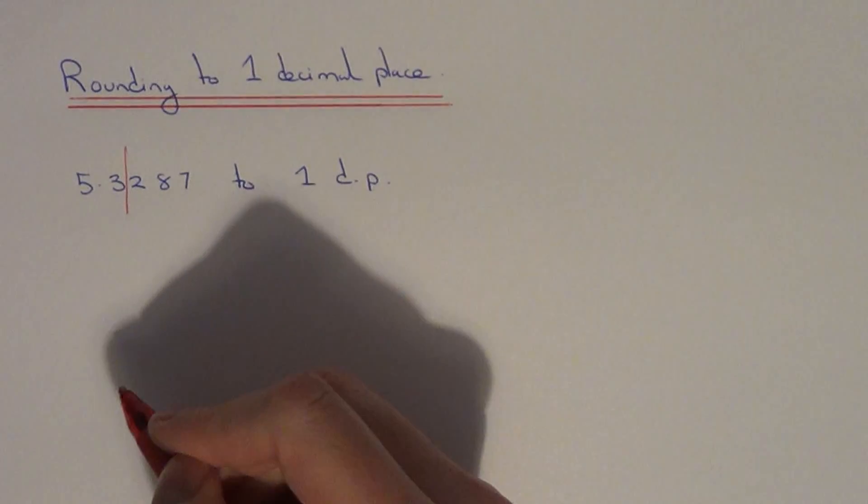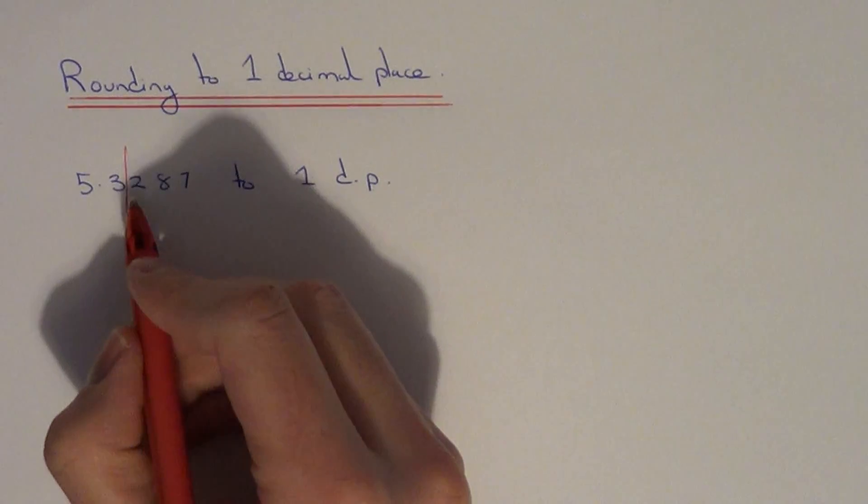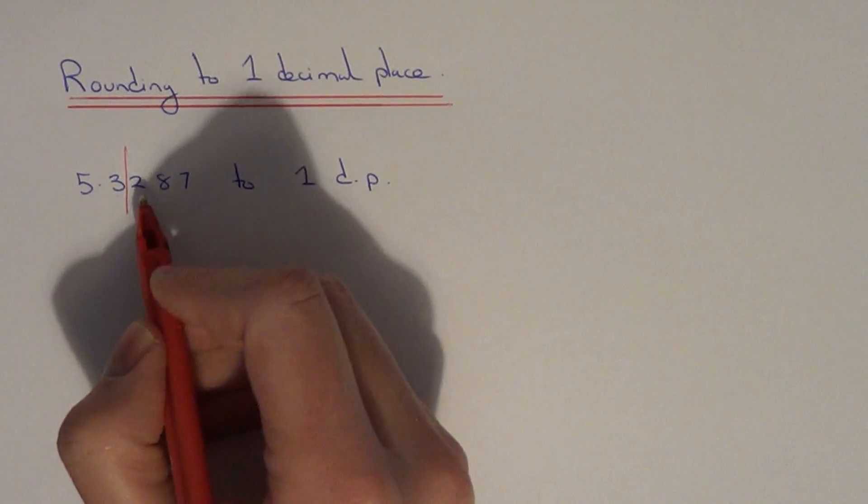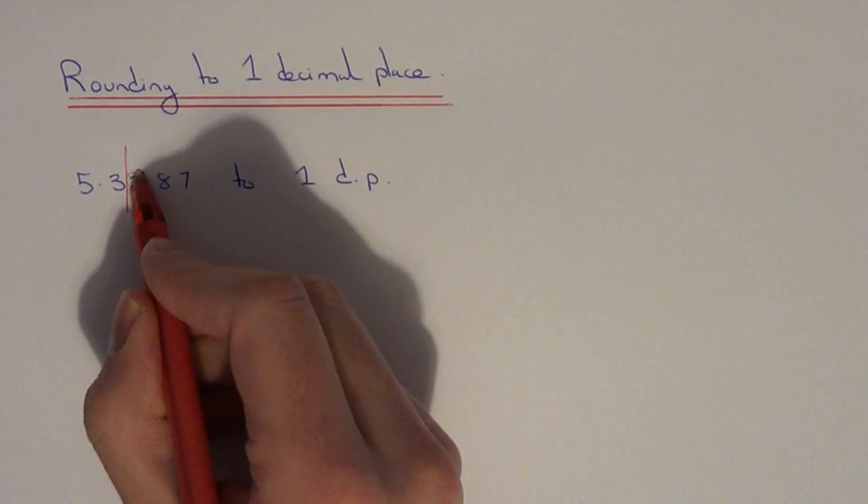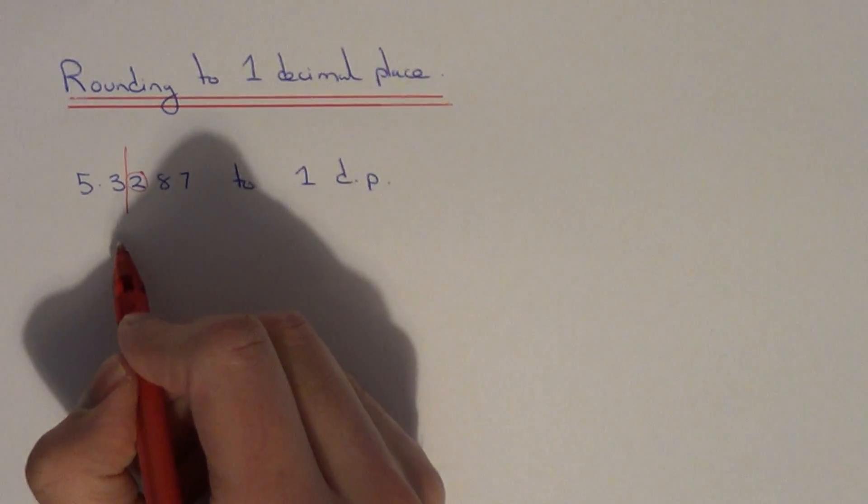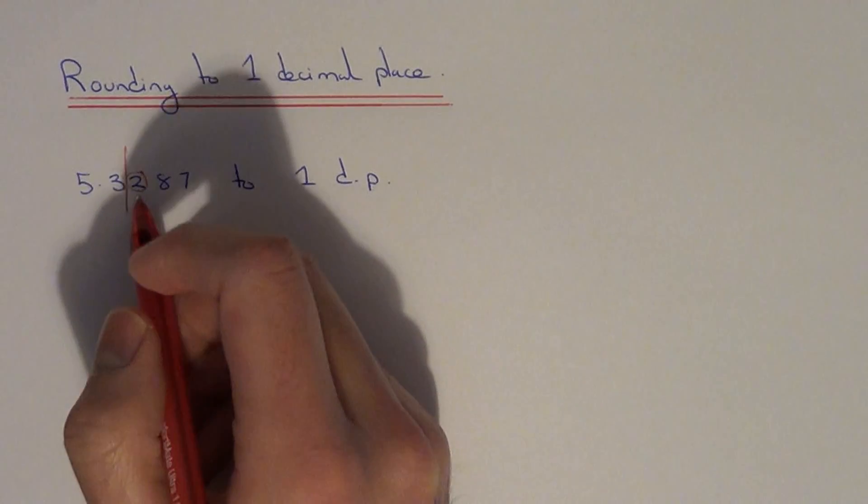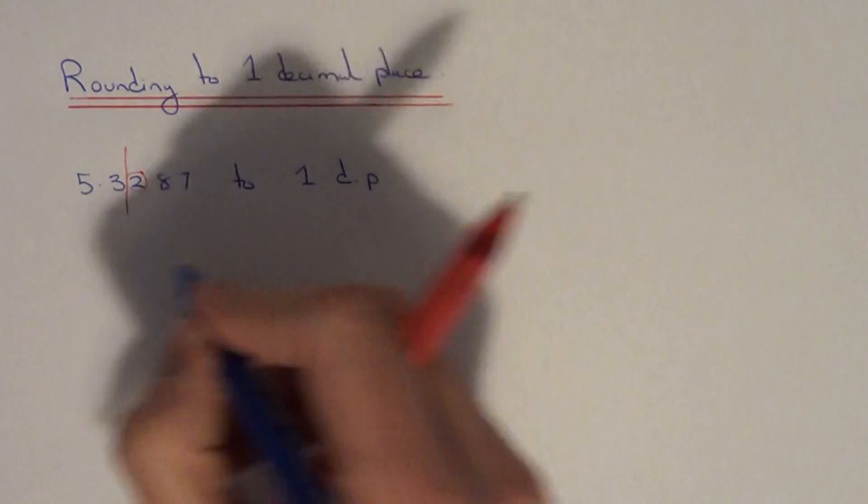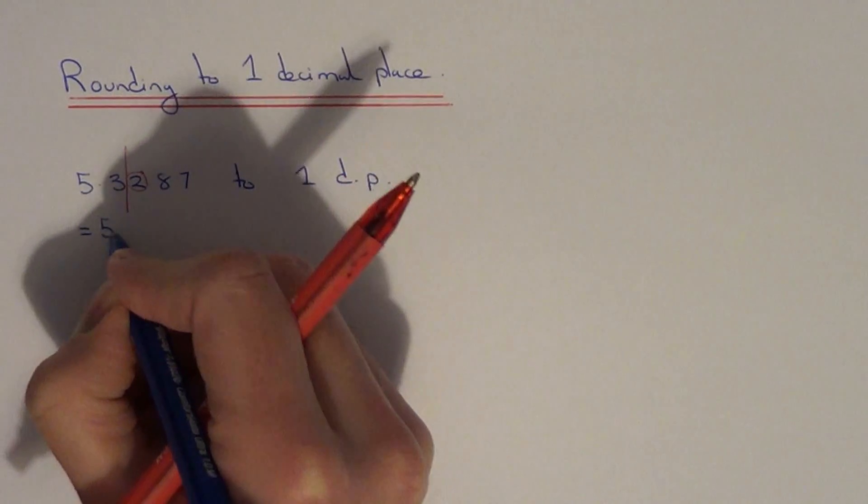To decide which one we round to, you need to look at the number after the line. Since this number is less than 5, we round the number down. Therefore, the answer will be 5.3.